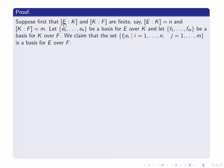Suppose first that [E:K] and [K:F] are finite, say [E:K] = n and [K:F] = m. Let {e₁,...,eₙ} be a basis for E over K and {f₁,...,fₘ} be a basis for K over F. We claim that the set {fⱼeᵢ | i = 1,...,n, j = 1,...,m} is a basis for E over F. There are exactly n times m elements in this set, so that'll prove the multiplicativity.